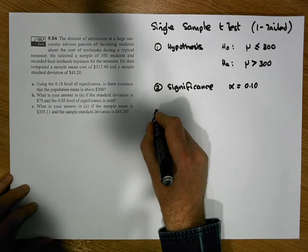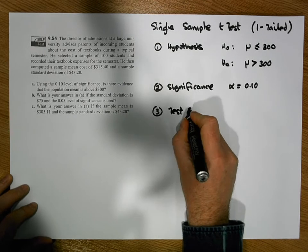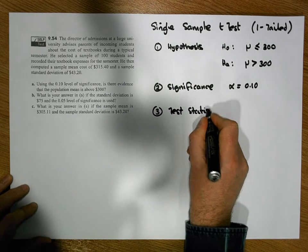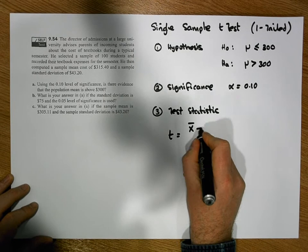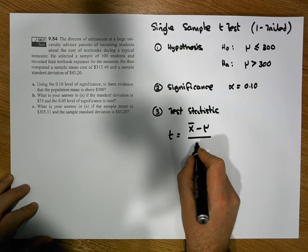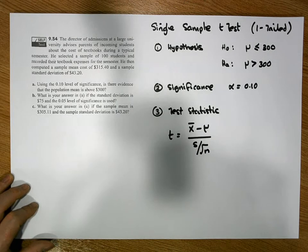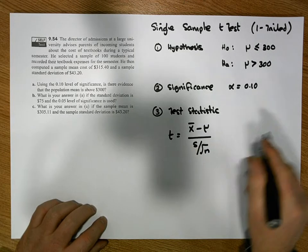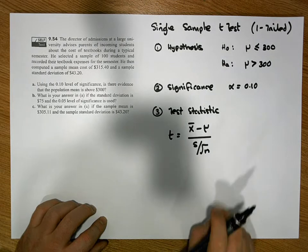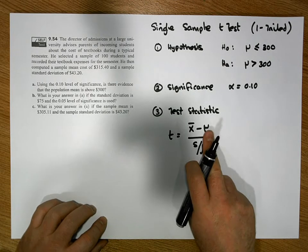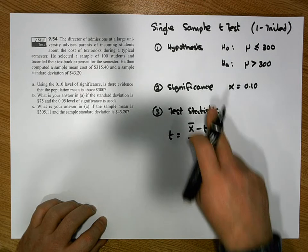Step three: we construct our test statistic. The test statistic is t = (x̄ - μ) / (s / √n), where x̄ is the sample mean, s is the sample standard deviation, n is the sample size, and μ is the hypothesized center of the distribution under the null hypothesis.